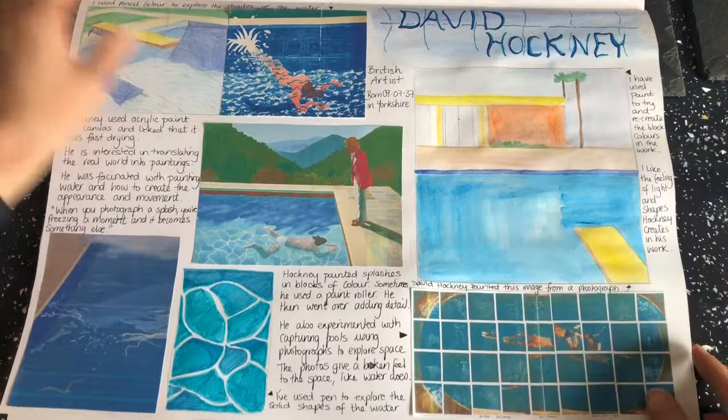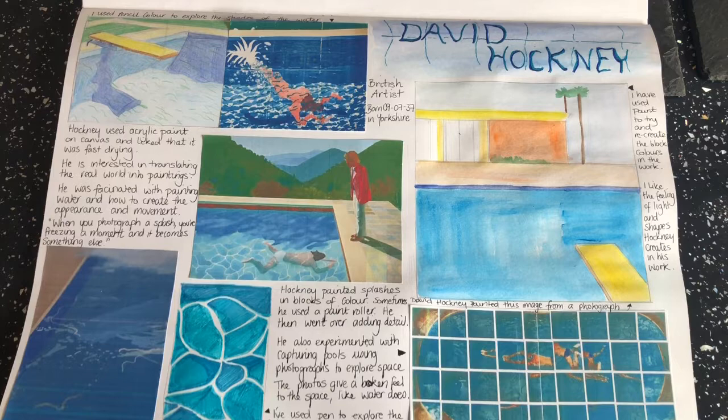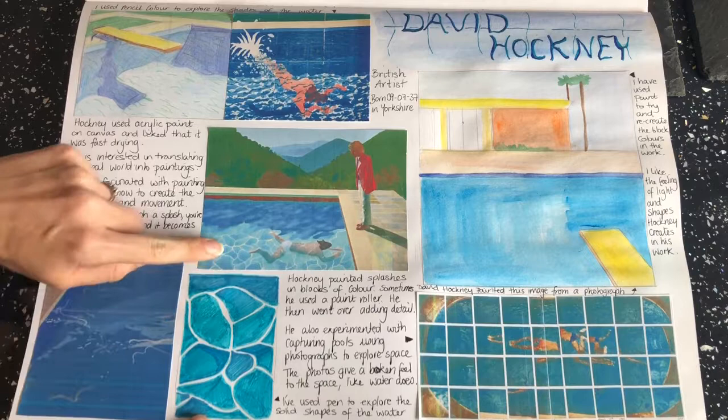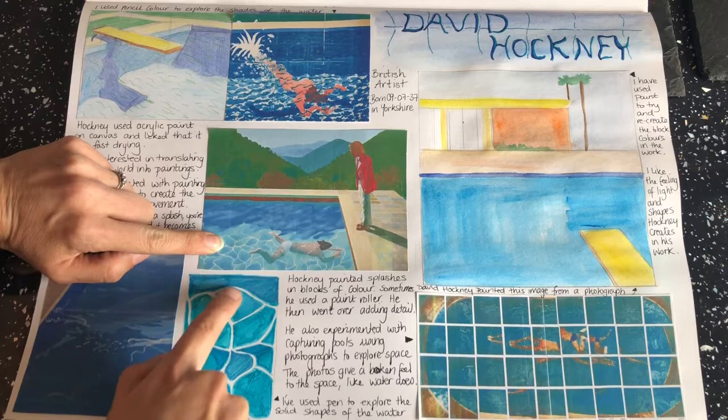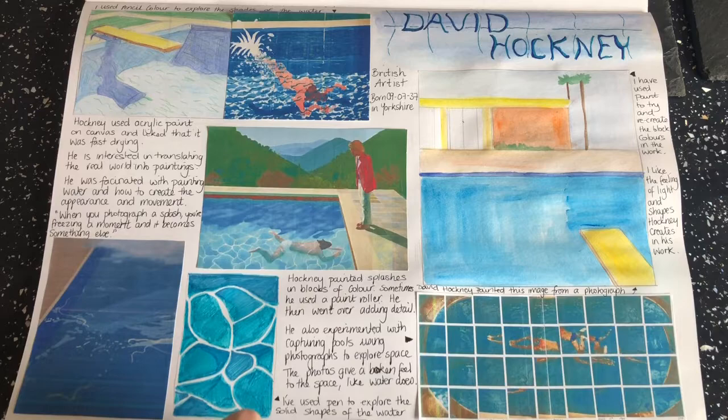On this page I've done three studies and clearly stated what I've been looking at. Here I've put: I used pencil colour to explore the shades of the water — it's really clear that I'm looking at the shades David Hockney might have used. Here I've put about blocks of colour and used paint, and down the bottom I've done a really small study of this section. These are quite deliberate marks, not random, so it's important that you copy it correctly. I've talked about exploring solid shapes with pen.